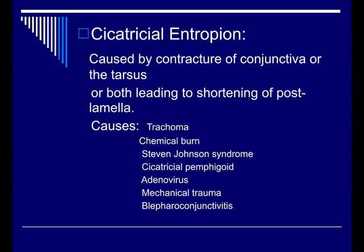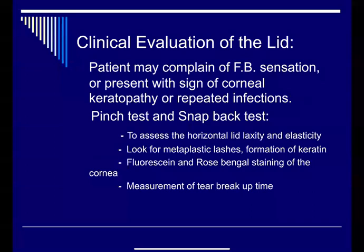Cicatricial entropion is caused by contraction of the conjunctiva or the tarsus, or both, leading to shortening of the posterior lamina. Causes include trachoma — which was very common here — chemical burn, Stevens-Johnson syndrome, cicatricial pemphigoid, mechanical trauma, or blepharoconjunctivitis. The patient will be complaining of foreign body sensation and may have corneal ulcers and infections, so we have to examine thoroughly to assess the lid integrity.